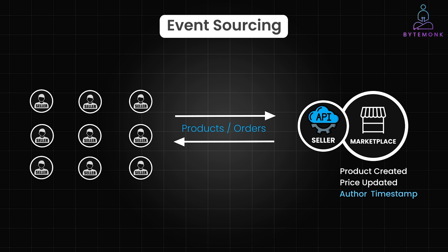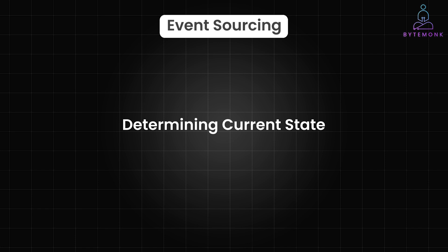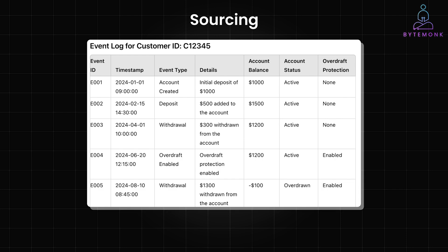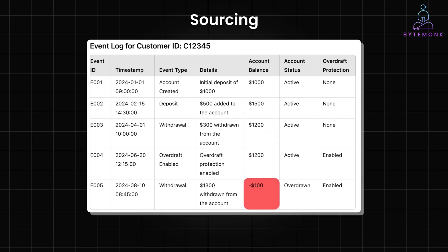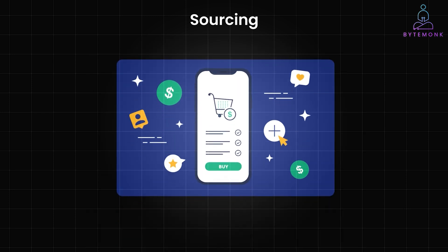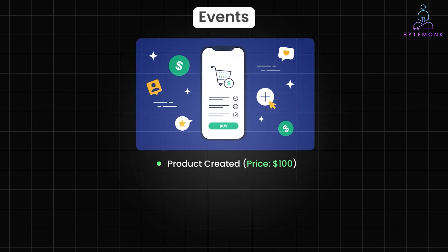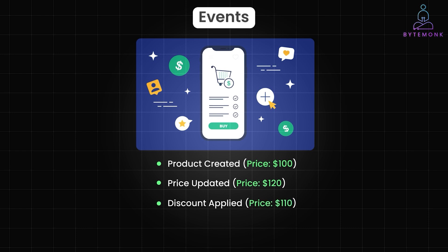However, storing only events leaves a challenge: determining the current state. This is where sourcing comes in. In the context of event sourcing, the term sourcing refers to deriving the current state from past events, rather than directly storing the state. Since the state is not directly stored, hydration is the mechanism that allows you to rebuild the state from the event log. For example, in an e-commerce application managing product pricing, the sequence of events might be: product created at $100, price updated to $120, discount applied to $110, and price updated again to $115.